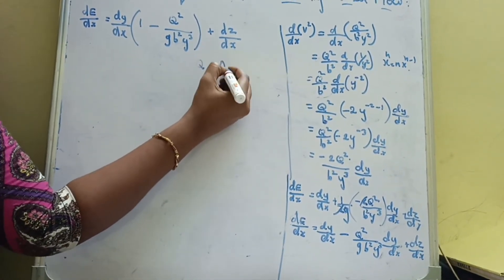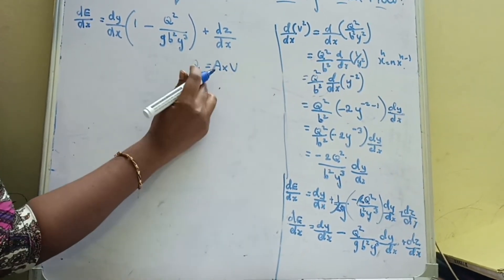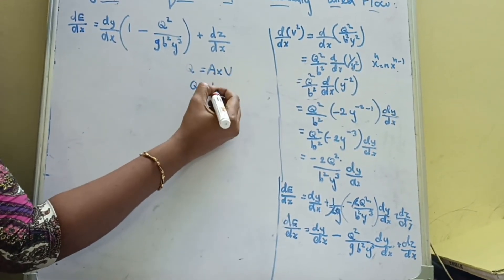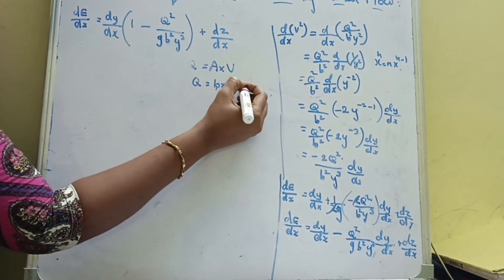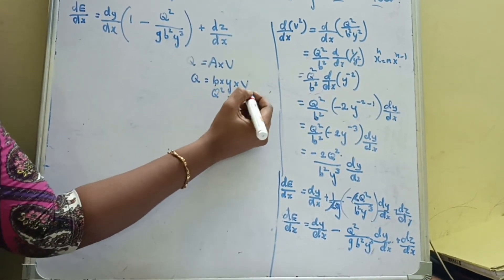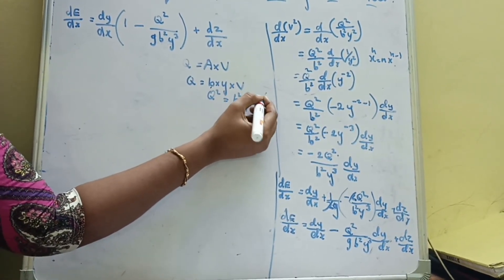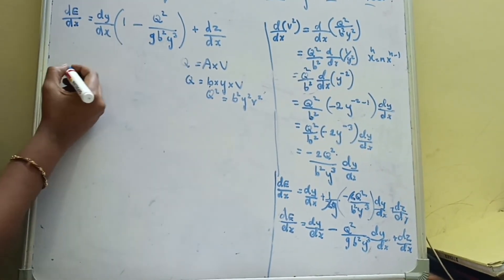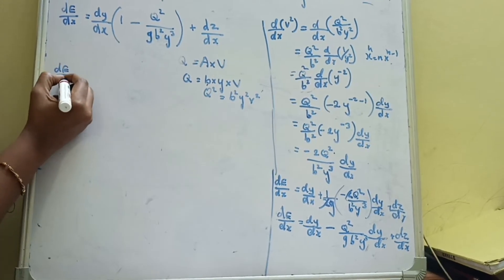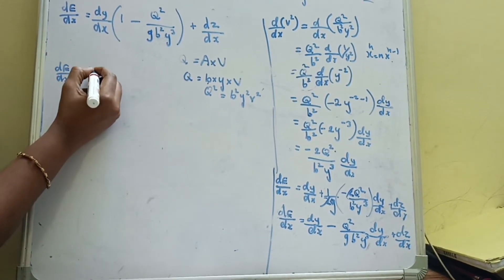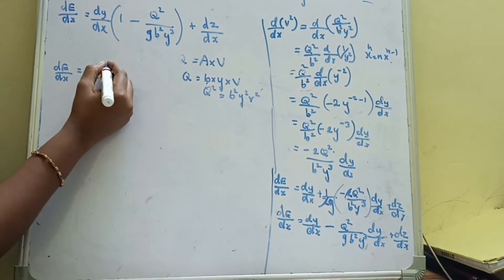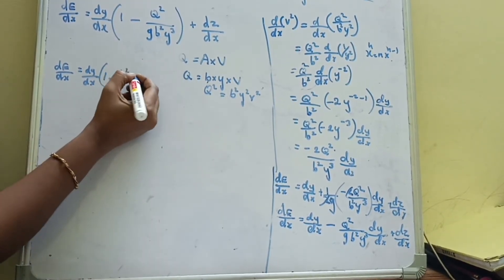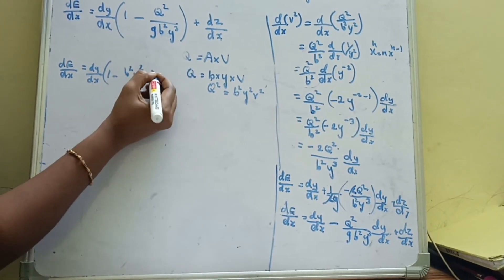Now we substitute the value of Q. Q equals discharge equals area times velocity. For the rectangular channel, area equals B times y, so Q equals B times y times V. Squaring both sides, Q-squared equals B-squared times y-squared times V-squared. We substitute this Q-squared value: dy/dx times [1 minus B-squared y-squared V-squared divided by (g times B-squared times y-cubed)] plus dz/dx.